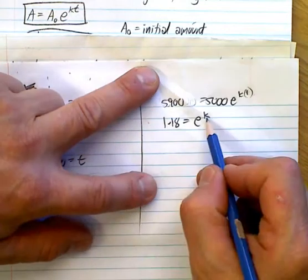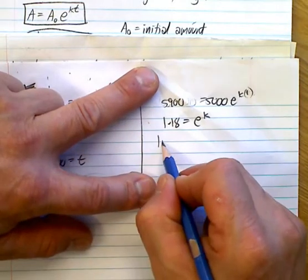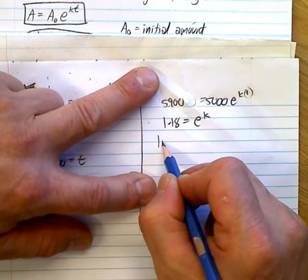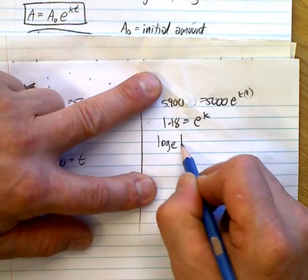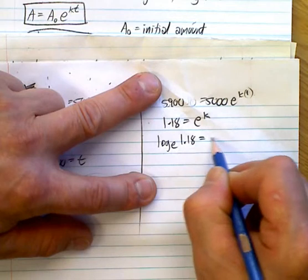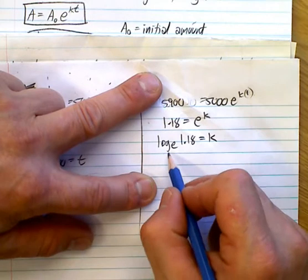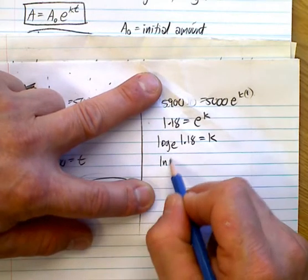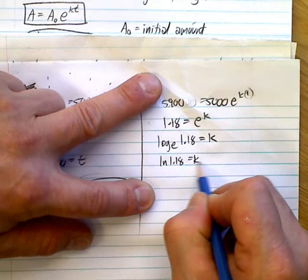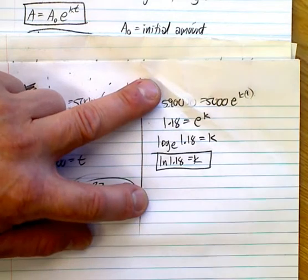So, 1.18 is E to the K. But what I need is a proper K to use in this formula here. So, let's solve for K. And that would be involving logging both sides. So, I can go log base E of 1.18 is equal to K. Which means this is LN. So, LN 1.18 is equal to K. And this is my K value. I would leave it like that.